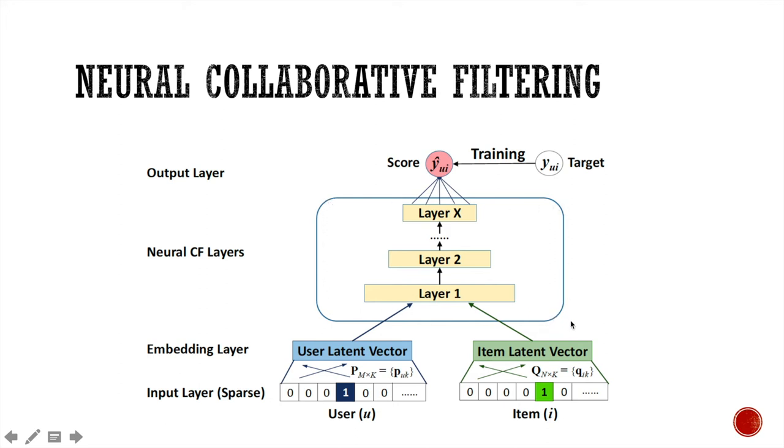The neural CF layers basically can be any kind of neural connections. Multiple layer perceptron, for instance, can be placed here. The paper claims that with the complicated connection in this layer and the non-linearity, this model is capable of learning the user and item interactions in the latent space properly.